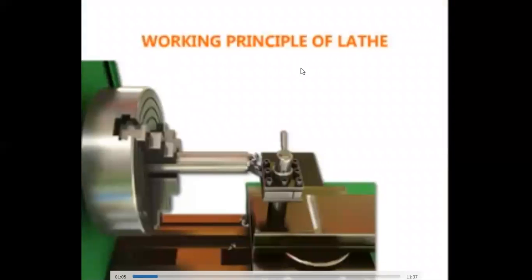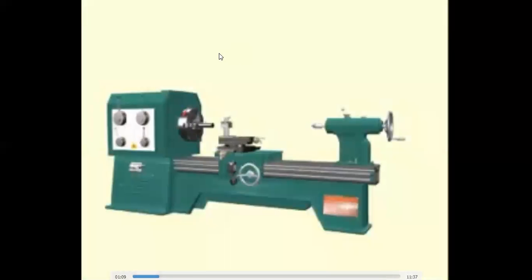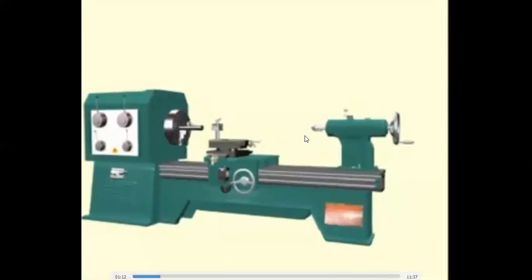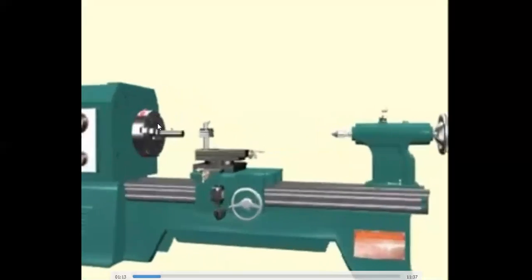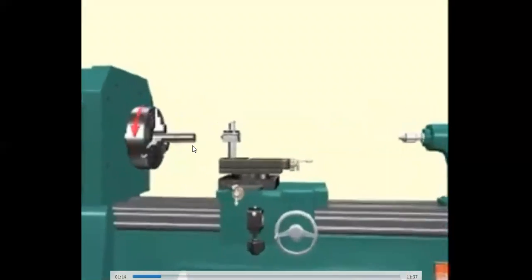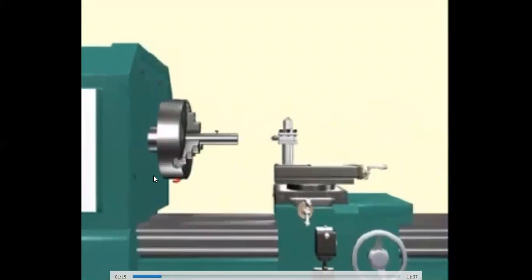Now we will see what is the main function of the lathe. This glass — this is the first part of the lathe machine. This is one of the machines and it removes material in the form of chips, and this is the cutting tool.